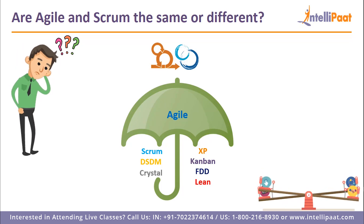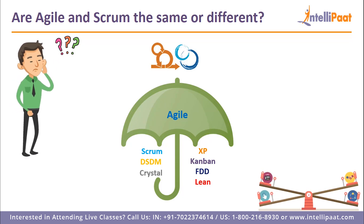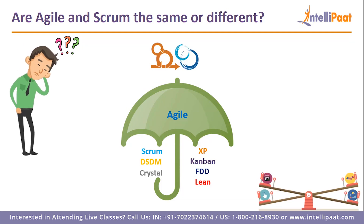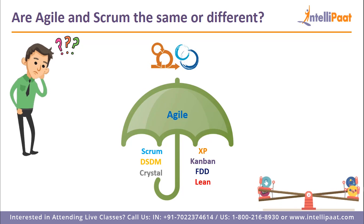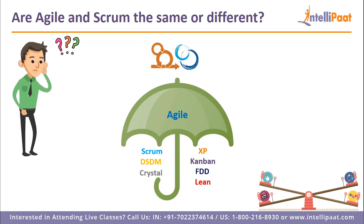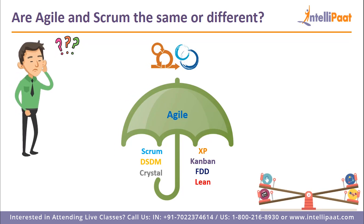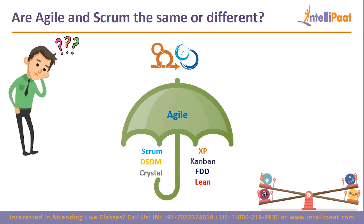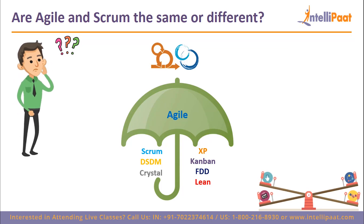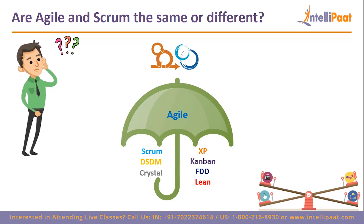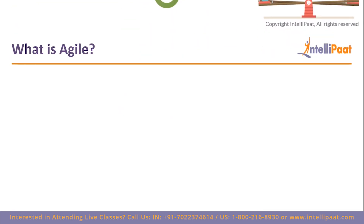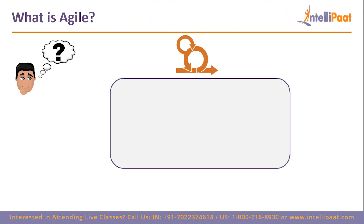Still confused? Let me ask you a question: what is the difference between color and green, or what is the difference between vehicle and bike? Probably your answer would be that color is a generic term and green is just a type or form of color. Exactly the same difference exists between Scrum and Agile. Now you must have gotten the difference, and if not, don't worry — we will discuss about both of them individually. We will start with a brief introduction to both Agile and Scrum.